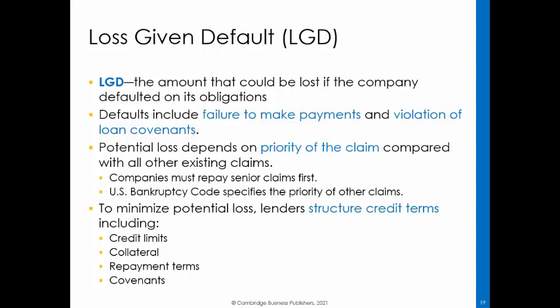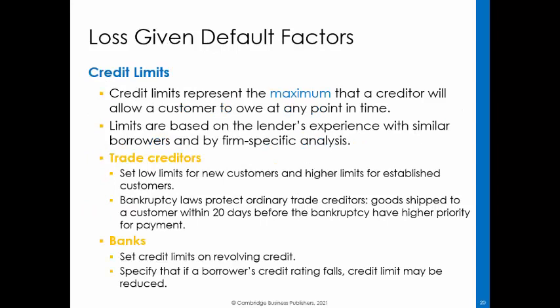To minimize potential loss, lenders structure credit terms that typically include credit limits, collateral, repayment terms, and covenants. The higher the risk of default, the stricter the credit terms a lender will impose. A credit limit is the maximum amount that a creditor will allow a customer to owe at any point in time. Some view a credit limit as the maximum amount the creditor is willing to lose to the customer. Trade creditors commonly set low credit limits for new customers and higher limits for customers with repayment histories. The US bankruptcy code provides some protection for trade creditors by giving them higher priority for payment of accounts payable for goods shipped within 20 days before bankruptcy.